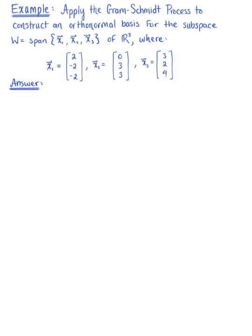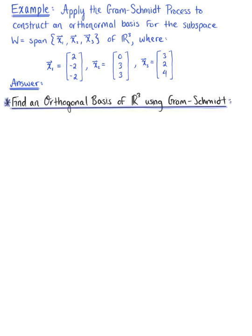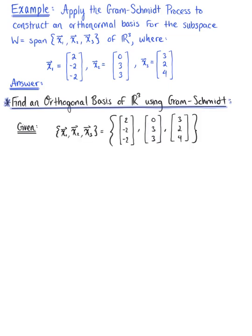The first thing we need to do here is find an orthogonal basis using the Gram-Schmidt process. We are given the set of vectors x₁, x₂, and x₃. To begin, we need to select one of the vectors in the set.